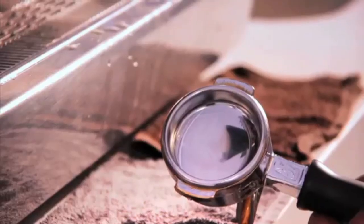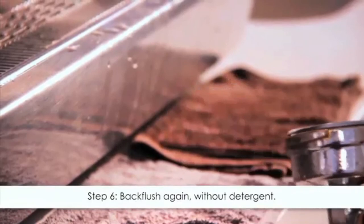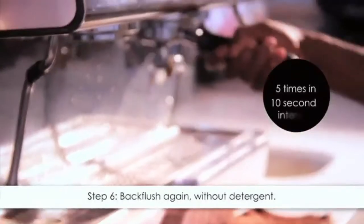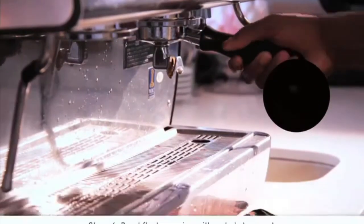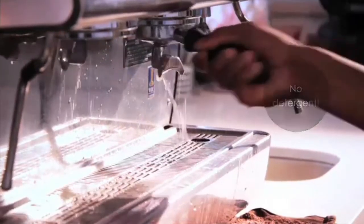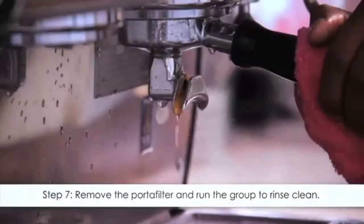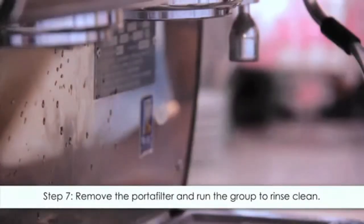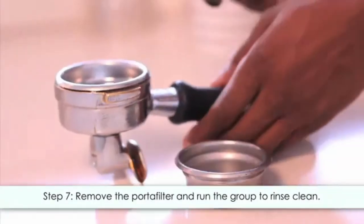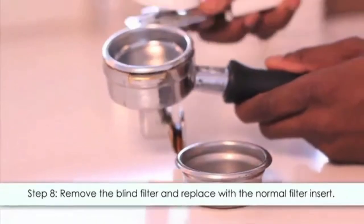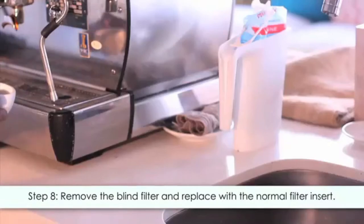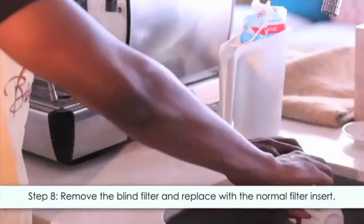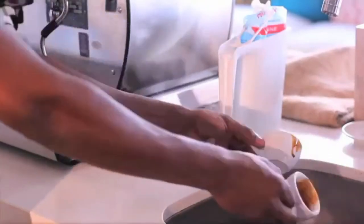Step six: reattach the portafilter and back flush five more times in 10 seconds again with stop start intervals, this time without detergent. Step seven: once again remove the portafilter and run the group to rinse clean. Step eight: now remove the blind filter and replace with the normal filter insert. Run it and then throw away a few shots of espresso to get your machine ready.